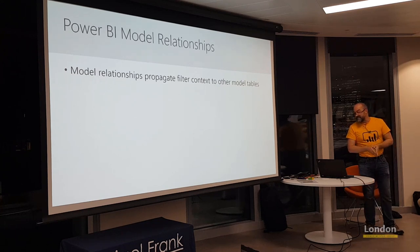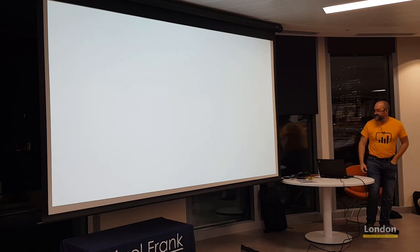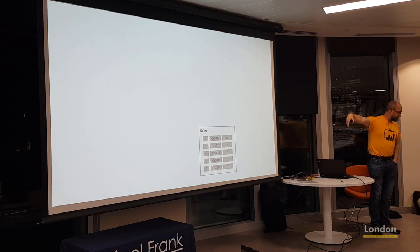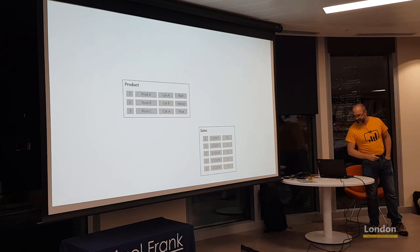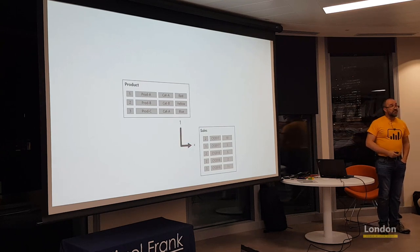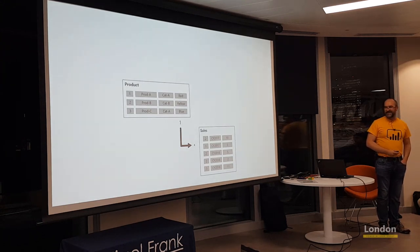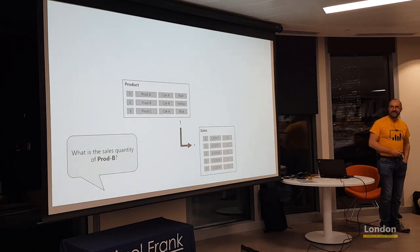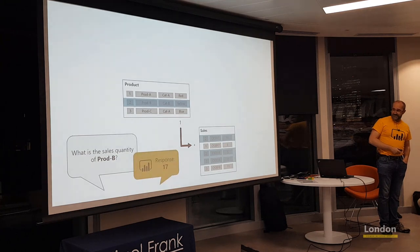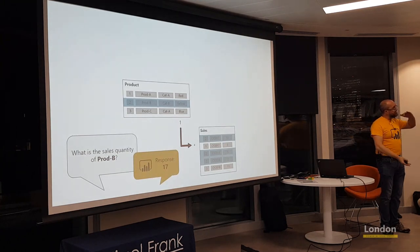Model relationships propagate filter context between model tables — easier shown than said. With a sales table and a product table, a one-to-many relationship is defined between them — note the '1' and the asterisk. When a visual asks for the sales quantity for product B, a filter is applied to the product table and propagated to sales, filtering it to rows for product two, and we see the sum of quantity.